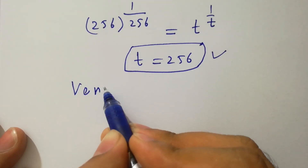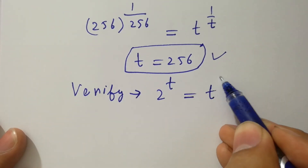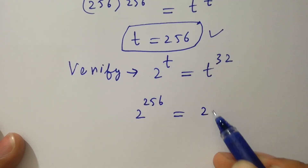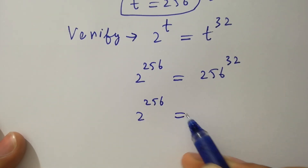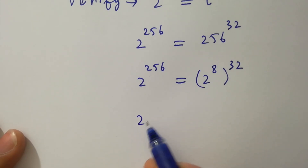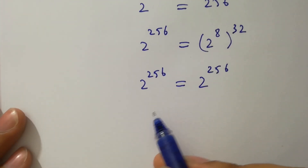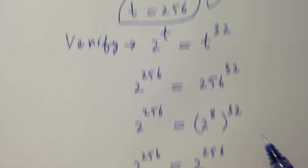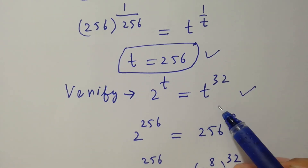In the next step I am going to verify: 2 to the power t equal to t to the power 32. Put the value of t, which is 256: 2 to the power 256 equal to 256 to the power 32. Now 256 is the same as 2 to the power 8, so 2 to the power 256 equals 2 to the power 8 times 32, which is 256. You can see left hand side equals right hand side, which shows that the value of t equals 256 satisfies the equation 2 to the power t equal to t to the power 32.